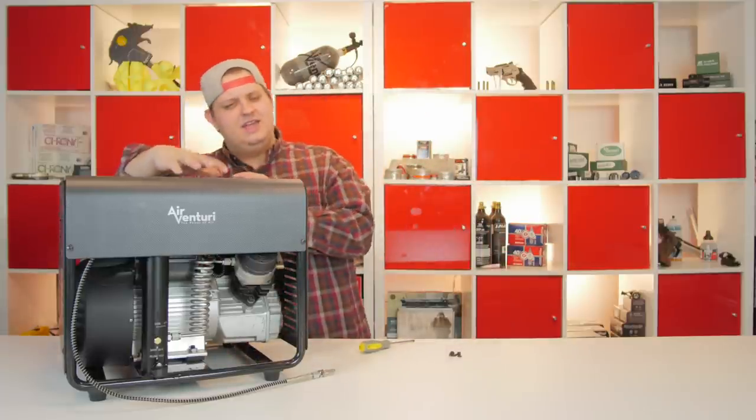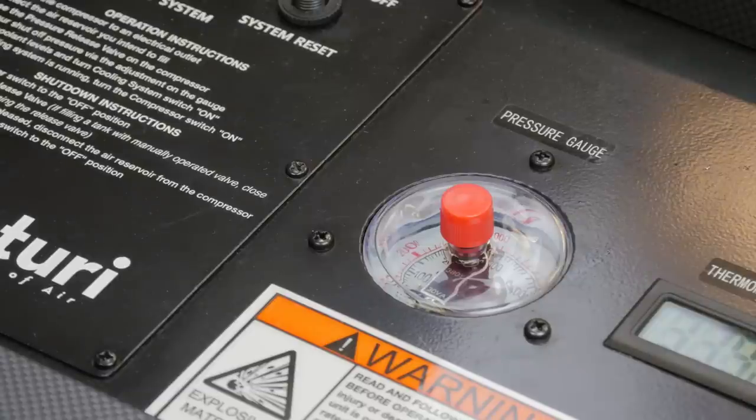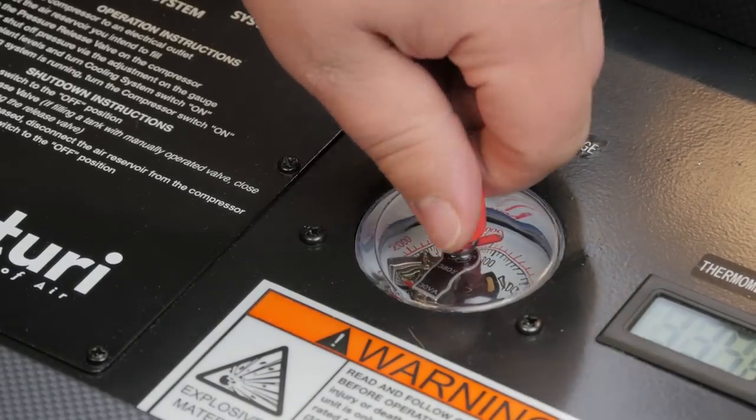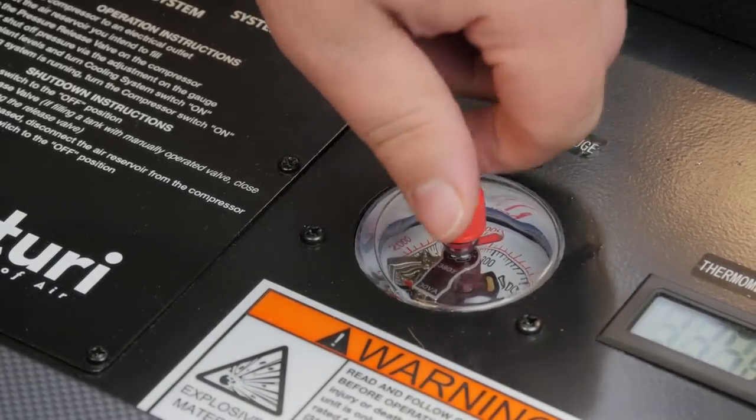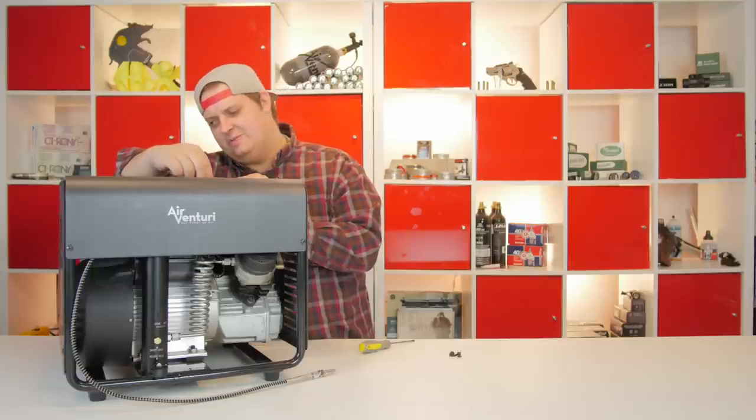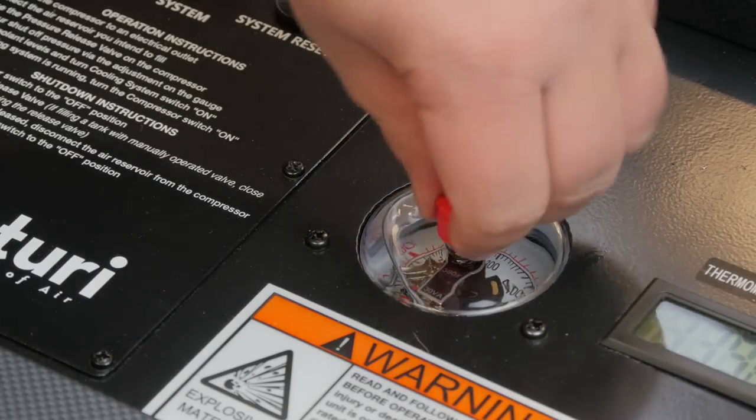Here's how to set your auto shutoff. You'll want to go to the gauge on the top of your compressor, and you'll notice that there's a little red dial on the top. And if you turn that dial just by itself, you'll notice that it just kind of free spins.